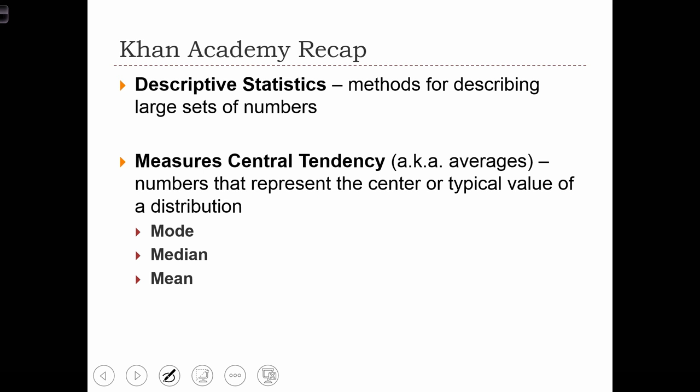The first group of descriptive statistics we're going to investigate are measures of central tendency, also known as averages, and these are numbers that represent the center of a distribution of numbers or, in some other way, a typical value from that distribution of numbers. We have three measures of central tendency: mode, median, and mean.